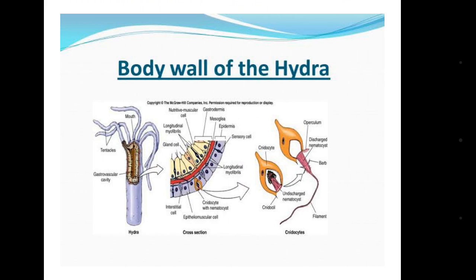These are the characteristics of animals from Phylum Cnidaria. Previously this phylum was known as Phylum Coelenterata because of its body cavity, which is known as the coelenteron.